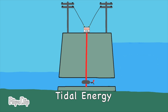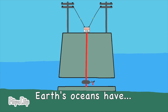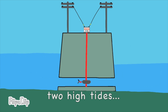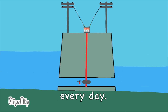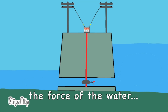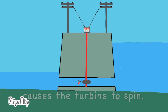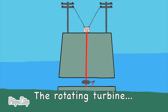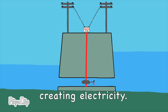Tidal Energy. Earth's oceans have two high tides and two low tides every day. As water moves through the turbine tunnel, the force of the water causes the turbine to spin. The rotating turbine spins the generator, creating electricity.